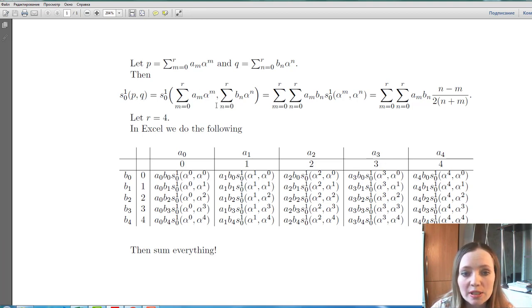And then if we expand these sums, this is the linear combination of the simple signed areas for simple polynomials and the coefficients are the products of the corresponding coefficients.